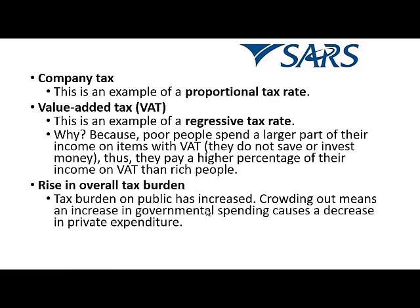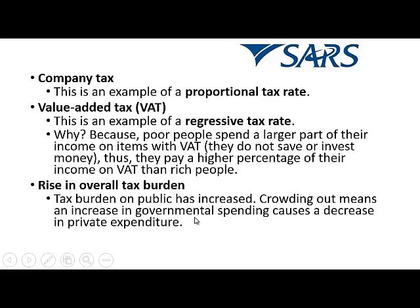When we talk about the rise in the overall tax burden, it means that the public is paying more tax than previously. Crowding out means that an increase in government spending causes a decrease in private expenditure — because the public has to pay more tax, it has less money available to spend, while the government has more money available to spend.